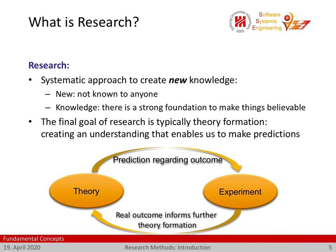This may be correct, meaning the experiment comes up with the expected results. Or — and that's actually more interesting — it may be incorrect: the results differ from what our theory predicted. In that case, the real outcome informs further theory formation. This back and forth is foundational to any form of research — not just computer science or information systems, but also physics, chemistry, biology. It's how all the hard sciences work.